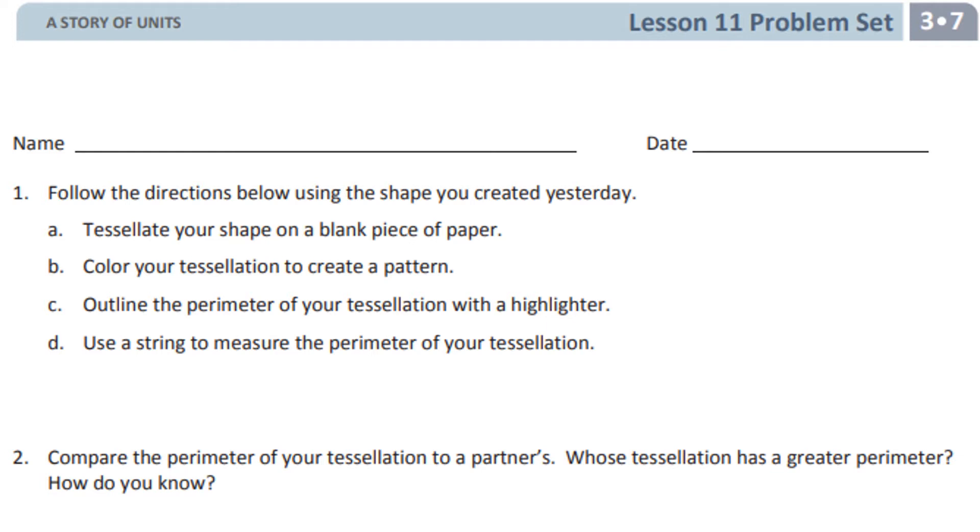So you're going to make a tessellation on your paper. Yesterday we learned how to make the tessellation, which is your little puzzle piece. So hopefully you still have it. You're going to trace it and then make another one. Trace it, then make another one. The same thing the whole time.